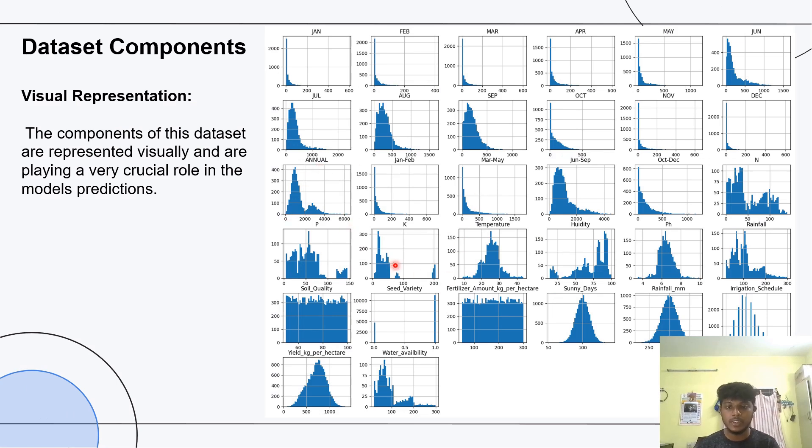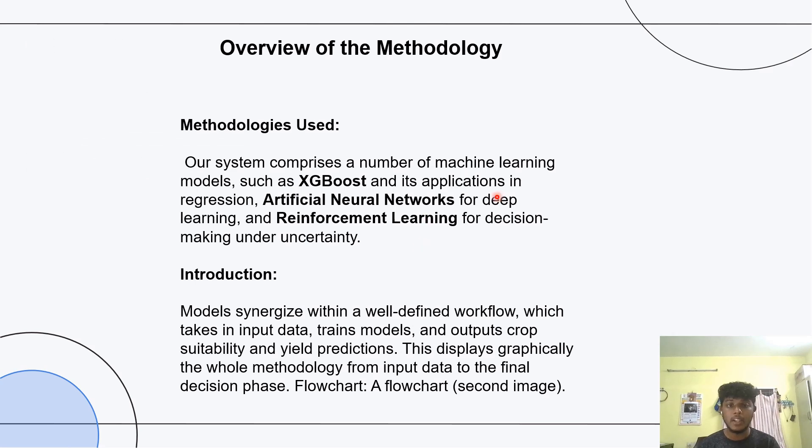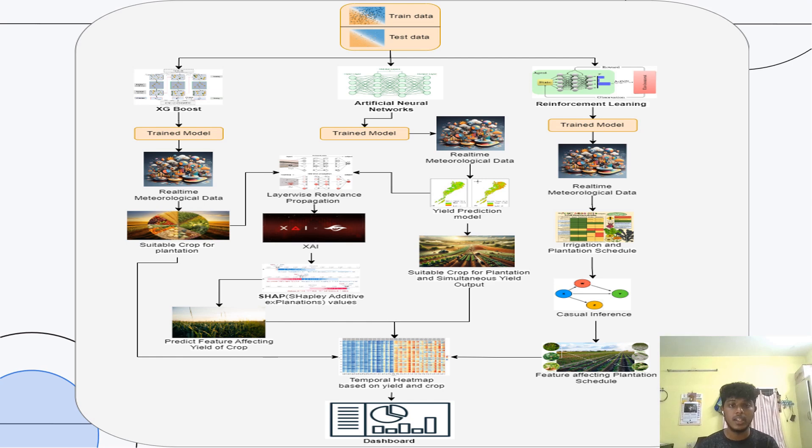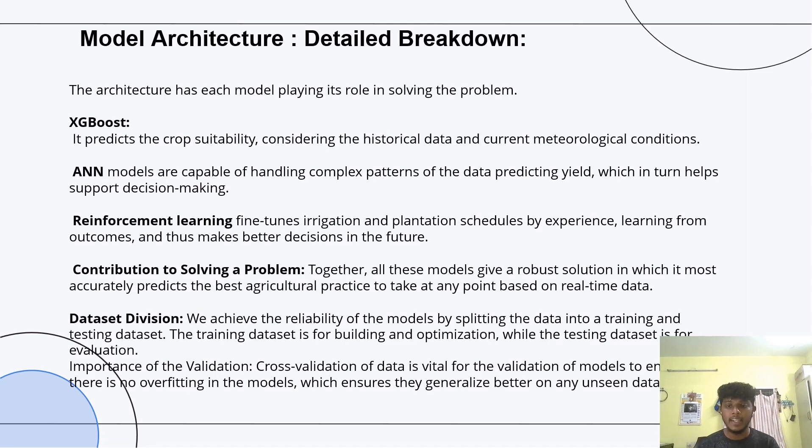We visualized the database on each of the factors. The methodologies we use are XGBoost, ANN, and reinforcement learning. We use reinforcement learning for irrigation and plantation schedules, ANN for the prediction model, and XGBoost for suitable crop selection. Combining these three, we get optimal decision-making for farmers and agriculture.